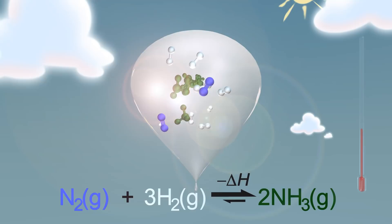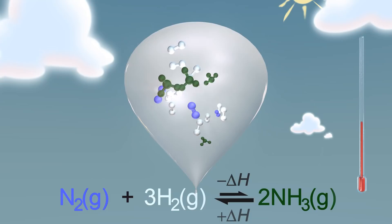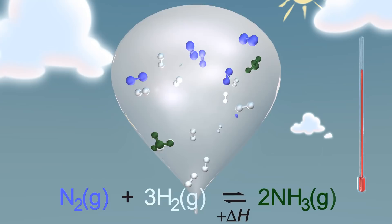The forward reaction is exothermic. Energy is released when ammonia is formed. Increasing the temperature drives the equilibrium position to the endothermic left-hand side as the system absorbs additional heat energy from the surroundings.